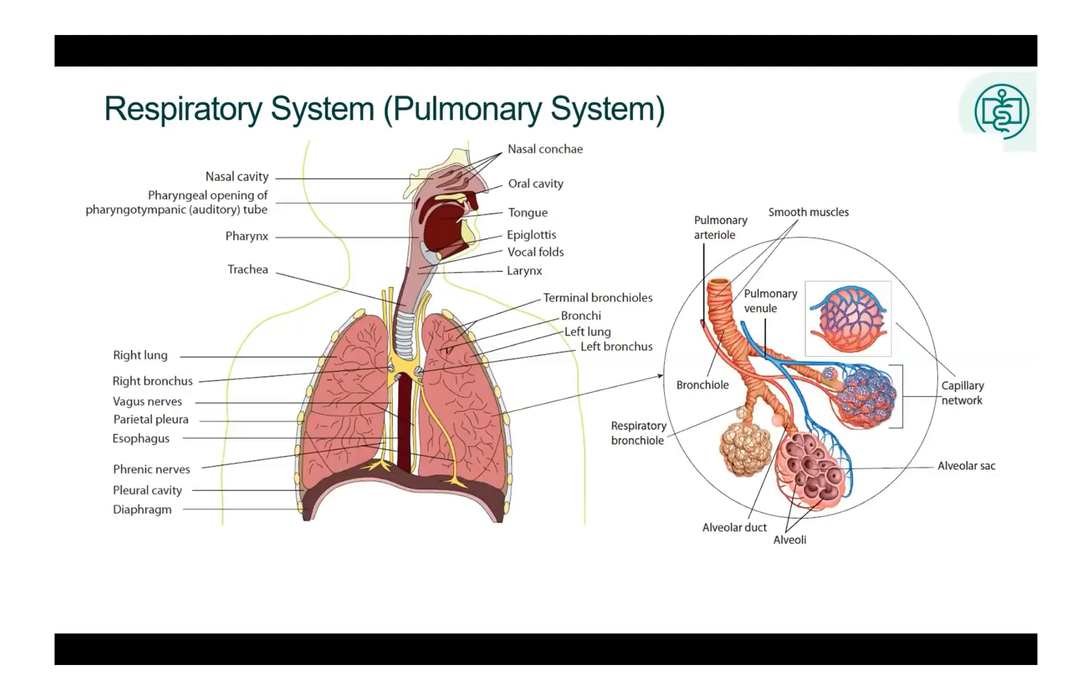The respiratory system is also known as the pulmonary system. It includes the nose, nasal cavity, pharynx, larynx, bronchi, and their smaller bronchioles, lungs, and alveoli. The respiratory system functions to swap carbon dioxide for oxygen. This gas exchange occurs through the permeable membranes of the alveoli.